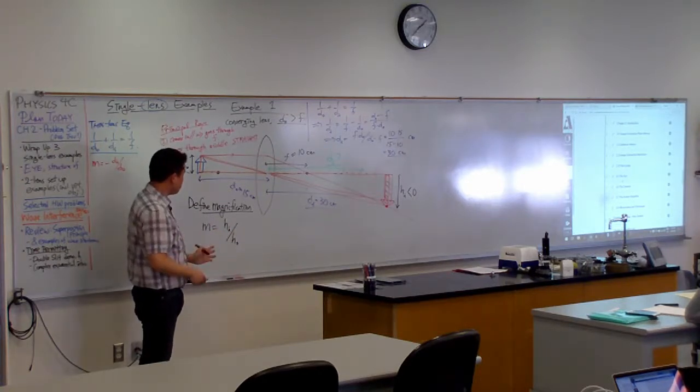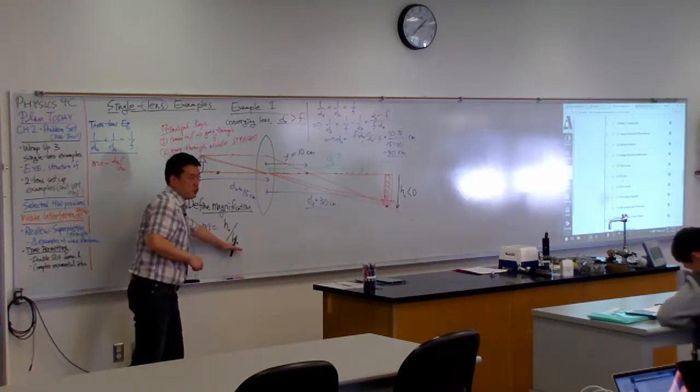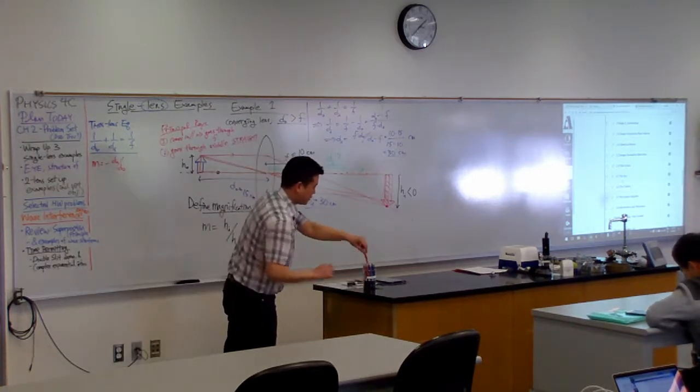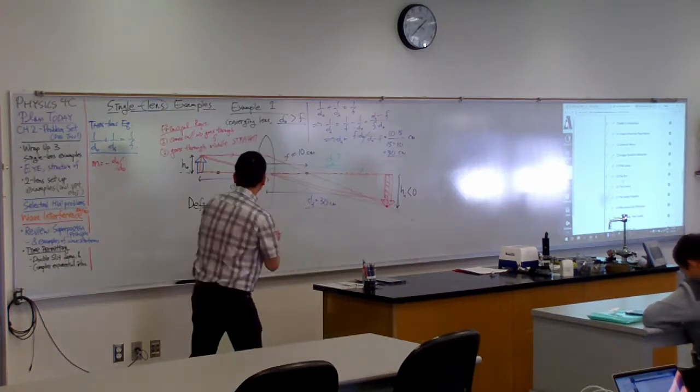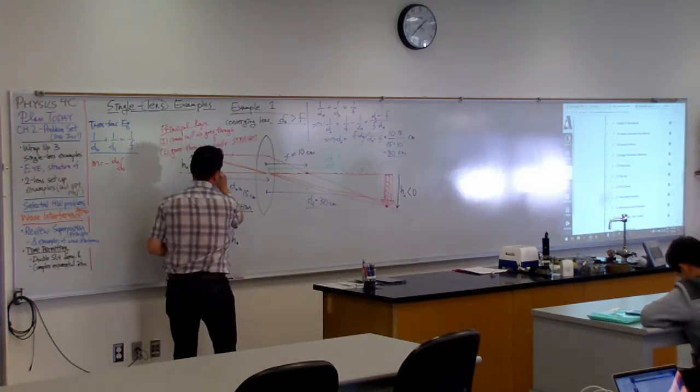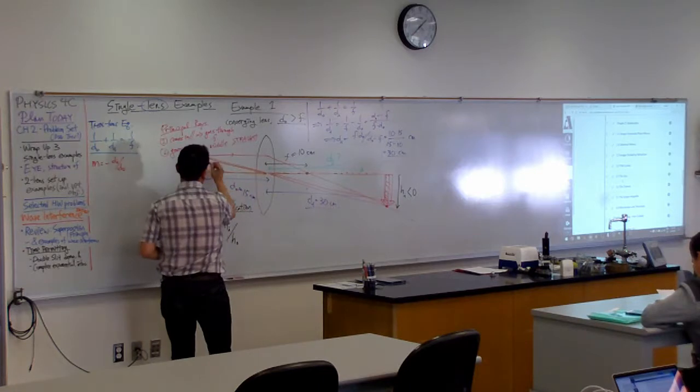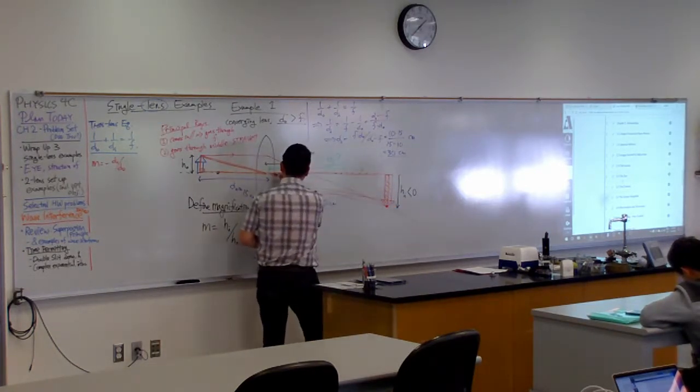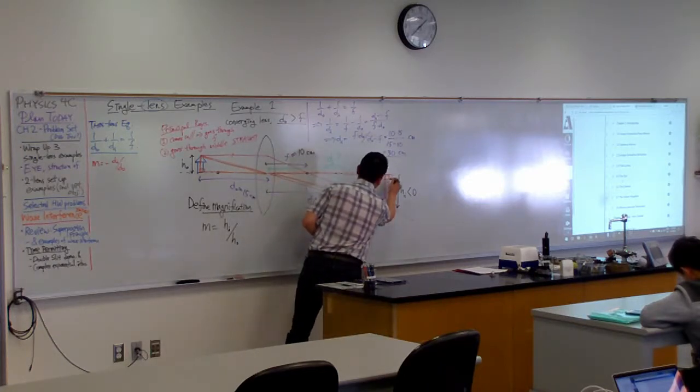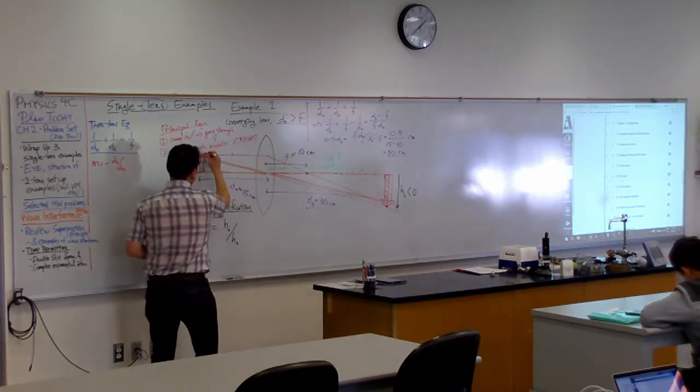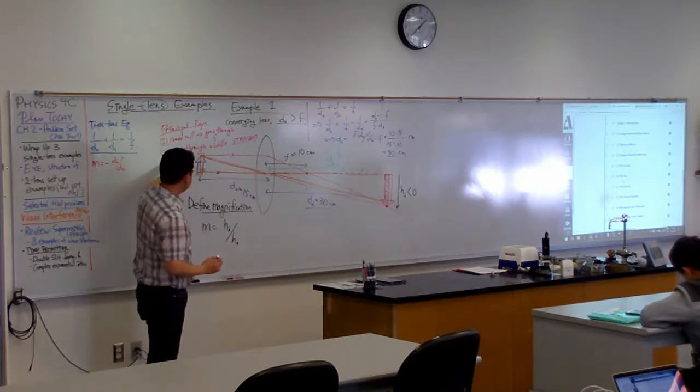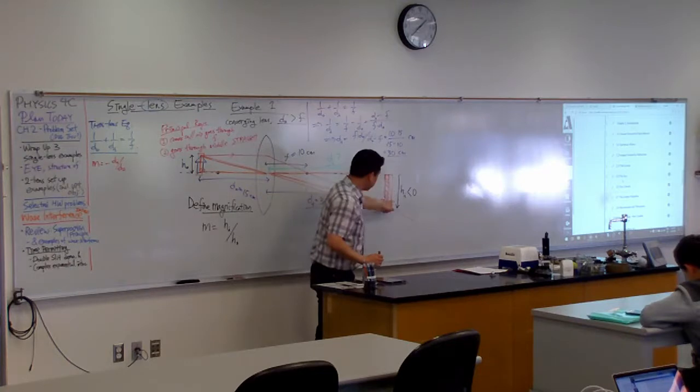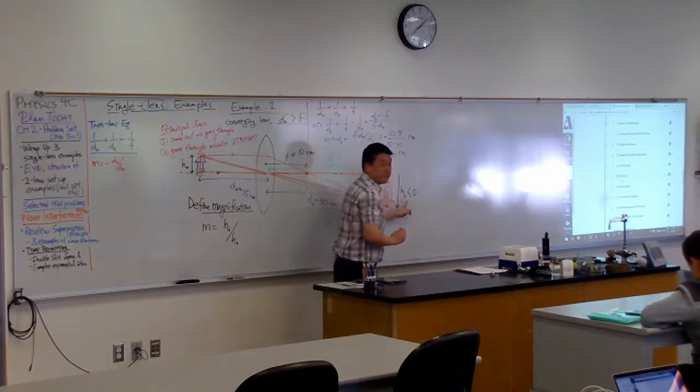So, even though this is how we define it, we won't really use this a lot. And this is where these auxiliary figures are helpful. This right triangle here, and this right triangle here. They share a feature in that one side of this right triangle is the height of the object. And one side of this right triangle is the height of the image.